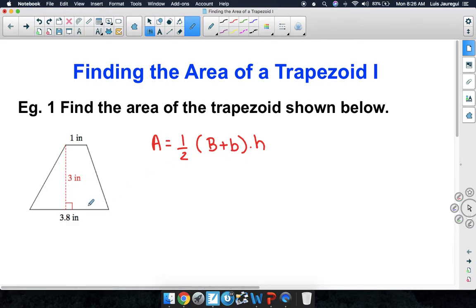Let's go ahead and identify what we are given. Here, the big base is equal to 3.8 inches, the little base is equal to 1 inch, and the height is equal to 3 inches.